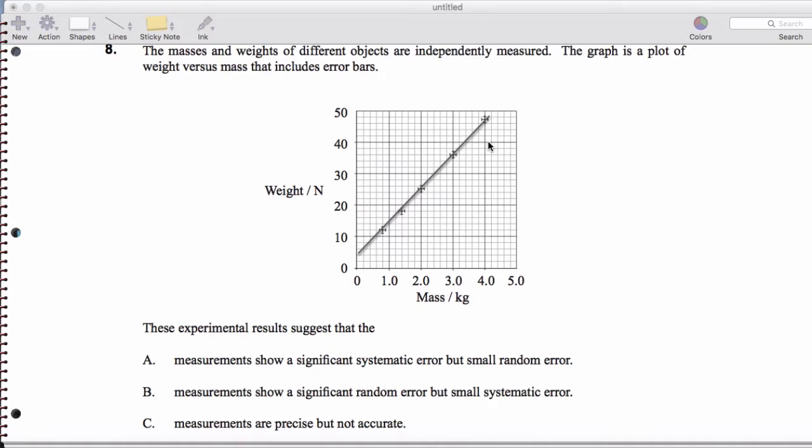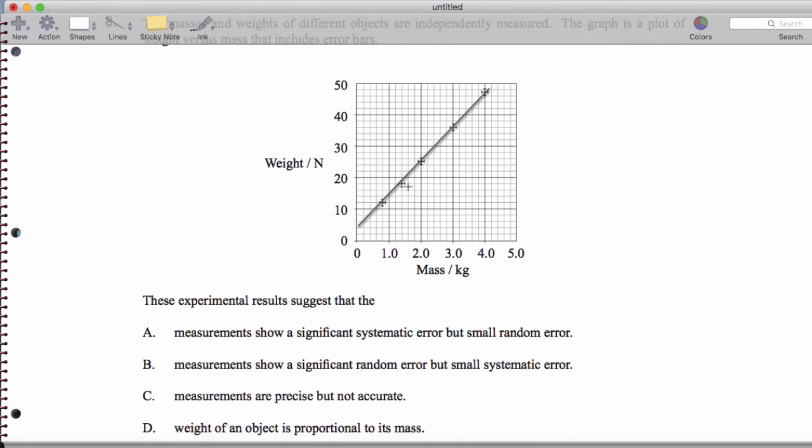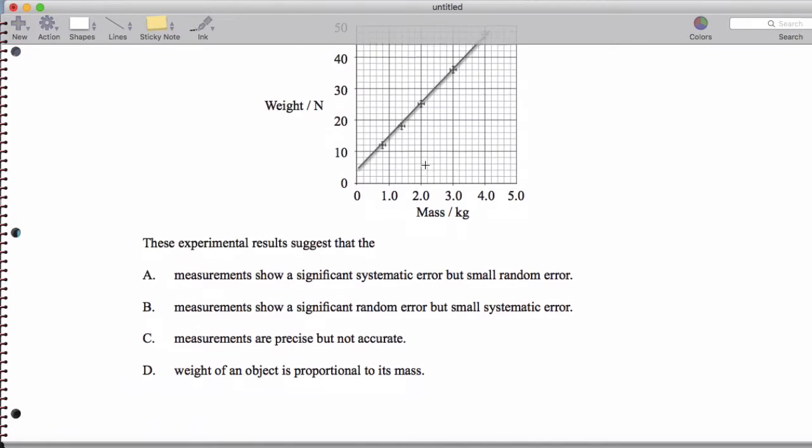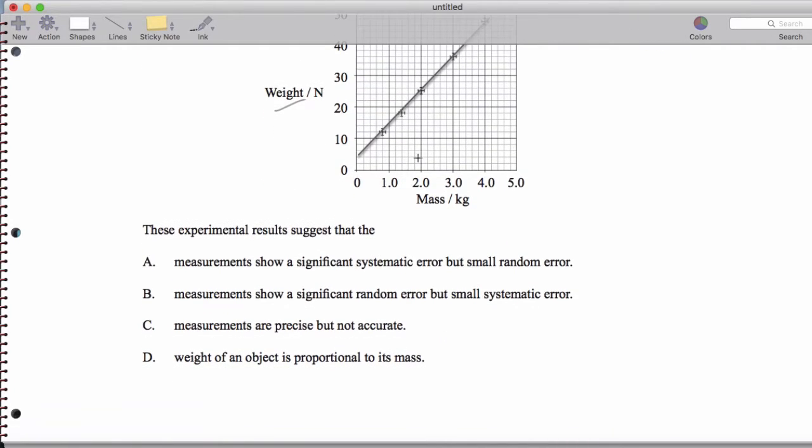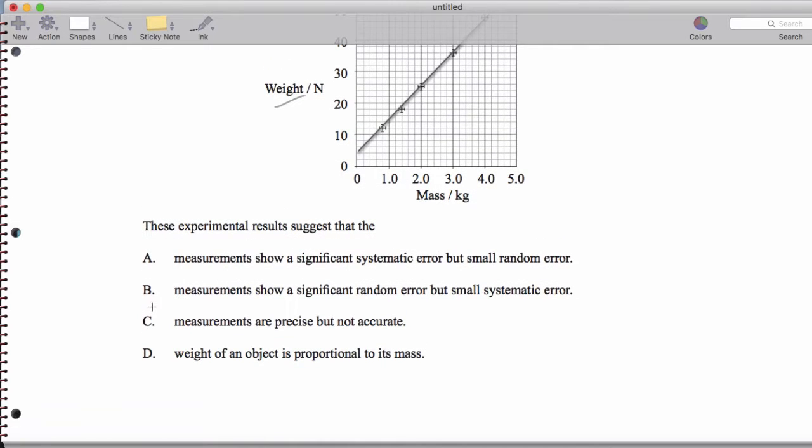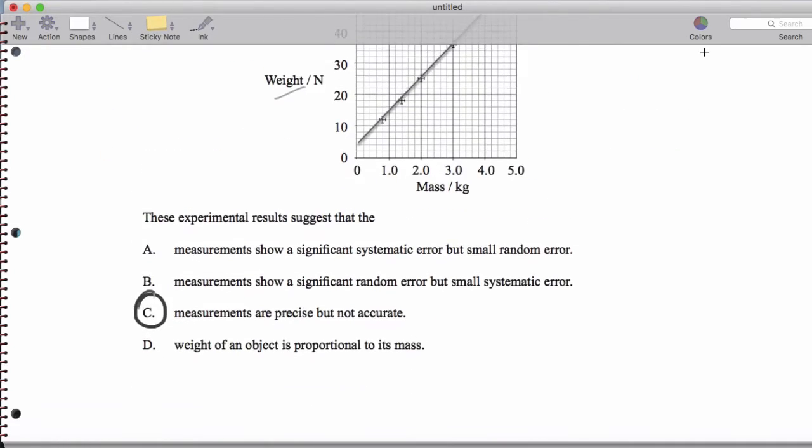And then for number eight, I drew a line through these points. And if you notice, the errors are pretty small. We get a nice slope. It looks like it's about 10 or 9 point something. So for a ratio of weight to mass, you'd expect the slope to be weight equals mg. So this is again the same idea of having precise measurements that are not very accurate. So we do have that systematic error. That's question number eight.